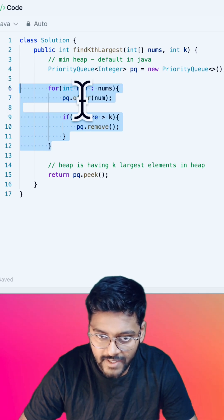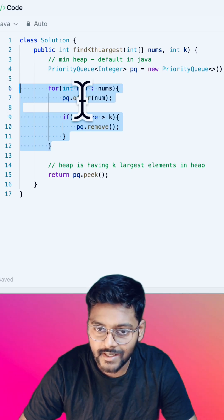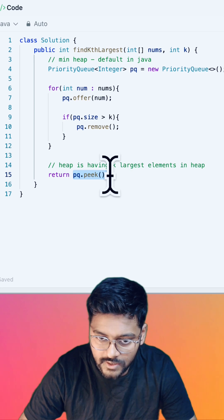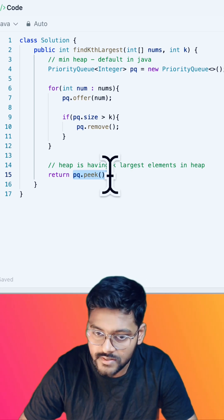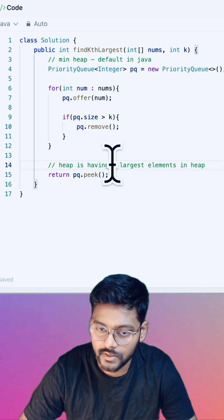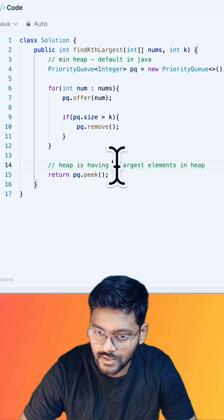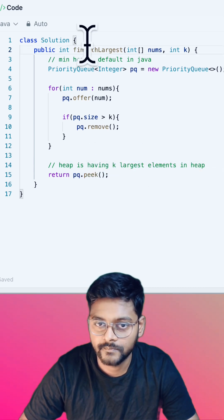So in the end, by the end of this iteration, I will be having heap with k largest elements. And now if we peek the smallest element, that smallest element is the smallest within the k largest elements. So that is the kth largest element. Thank you guys.